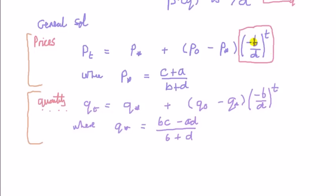So when is it the case that pt will reach p star? It must mean that over time this number gets smaller and smaller. So you're timesing a number that's smaller and smaller by a number. So this second term eventually tends to zero. Well, when does that happen?